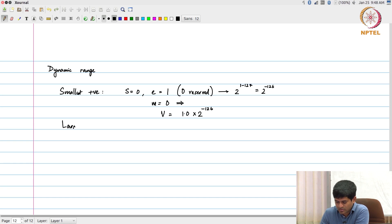What is the largest positive value? Again, S is equal to 0, this is the sign bit. E in this case is, again, it should be 255, but once again 255 is reserved. I will say 254 is permitted, which means that it basically corresponds to 2 to the power 254 minus 127, which is equal to 2 to the power plus 127.